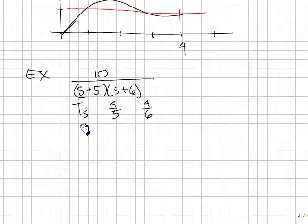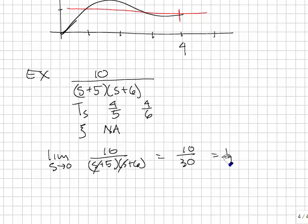The second thing, we want to look at damping ratio. In this case, there is no damping ratio. The system doesn't oscillate. And finally, we need the final value, so let's take the limit as s goes to 0 of 10 over (s plus 5)(s plus 6), and that is those go to 0, 10 over 30, 1 third. Now I can approximate the plot.